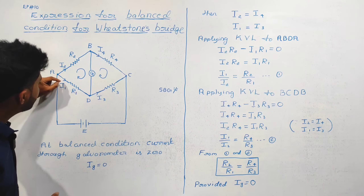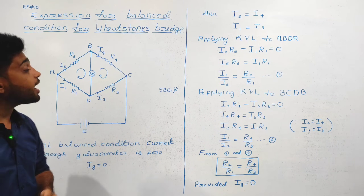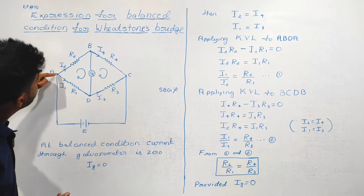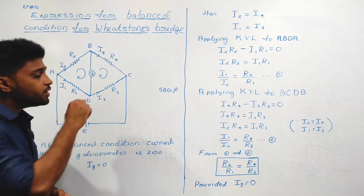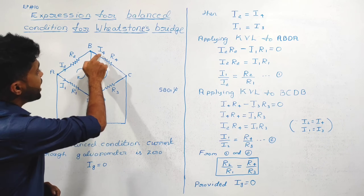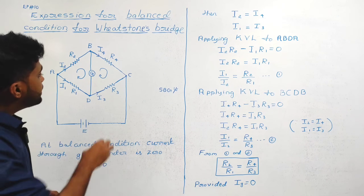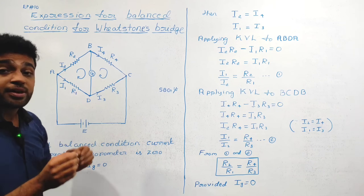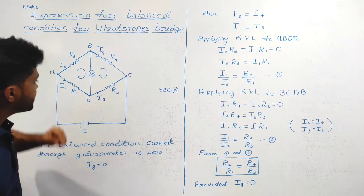I1 is the current flowing through R1, and I2 is the current flowing through R2. I3 is the current flowing through R3, and I4 is the current flowing through R4. We also have a galvanometer through which a current passes.